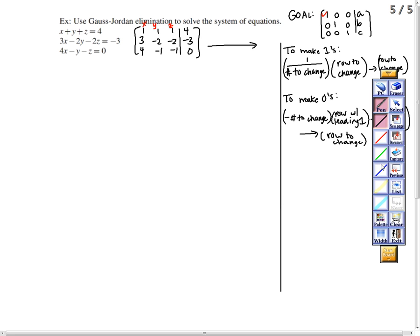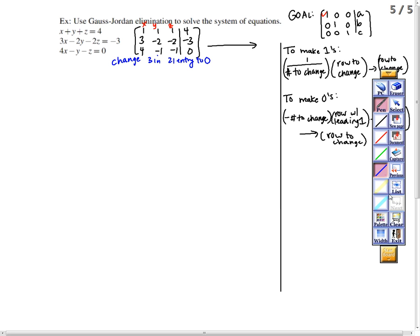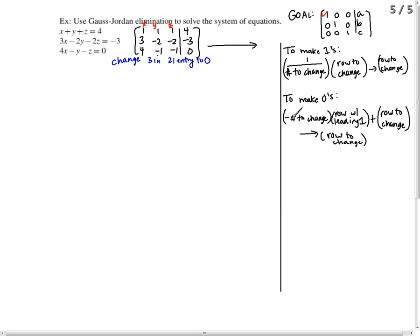So we need to make a zero. Let's change. We need to change the 3 in the 2, 1 entry to zero. To make a zero, we do the negative of the number we're trying to change. We want 3 to be zero, so that's negative 3, times the row with the leading 1 in it that lines up. So the 1 in that column is in row 1. We're going to add that to row 2 and put our answer back in row 2.